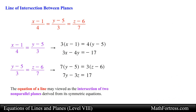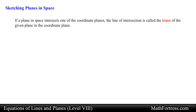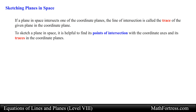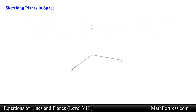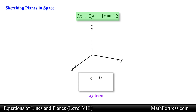Alright, now let's go over how to quickly sketch planes in space. If a plane in space intersects one of the coordinate planes, the line of intersection is called the trace of the given plane in the coordinate plane. To sketch a plane in space it is helpful to find its points of intersection with the coordinate axes and its traces in the coordinate planes. For example, consider the plane given by the following equation. We can find the xy trace by letting z equal 0, which reduces the equation of the plane to the following equation.